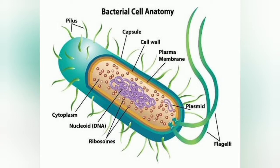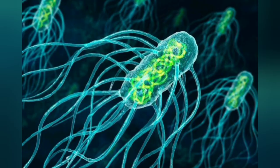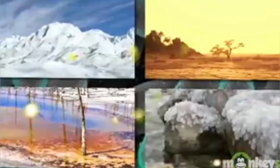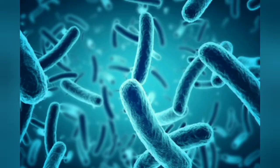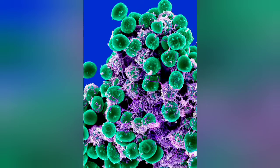Bacteria are very diverse. They have adapted to live in every type of environment on Earth, including areas of high heat, extreme cold, high acid, or high salt content. They are round, rod, or spiral shaped. Some are easily wiped out by medicines, while some resist them.